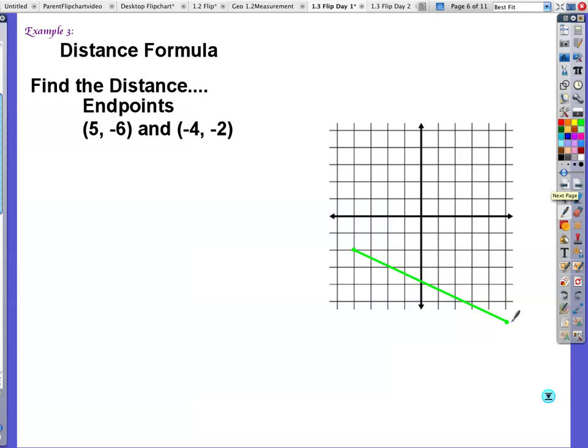All right. This is a different line completely. I've got my endpoints. 5, negative 6. Go over 5, down, negative 6. And then negative 4, negative 2. If I, and I'm going to show you this the other way. What if I wanted to call this x1 and y1? And then I call this one x2 and y2. All right. Then I would go 5 minus negative 4 squared plus negative 6 minus negative 2. Maybe I shouldn't have done that yet. I don't want to skip a step on you.